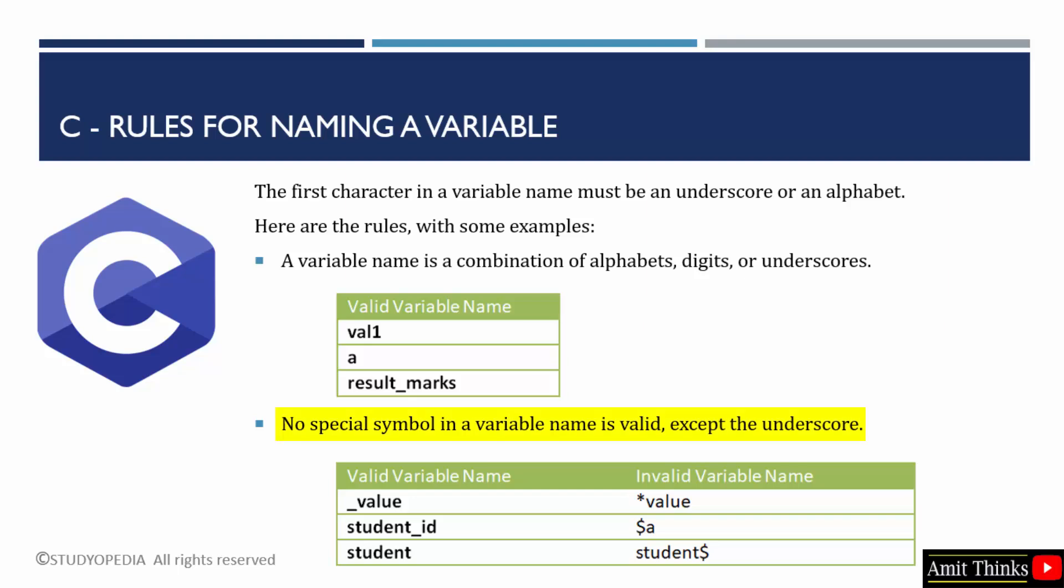Other than underscore, you cannot use any symbol. That is, no special symbols are allowed except underscore. Below, you can see the valid variable name and invalid variable name. You cannot add any special character, so we can't add star, dollar, or any other special character. But we can add underscore as displayed on the left. These are the rules for naming a variable.